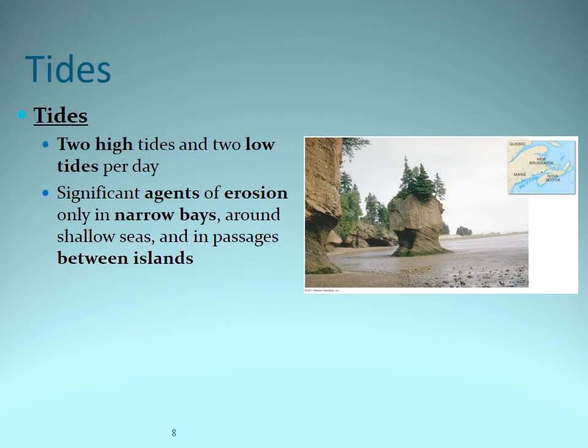Tides can actually be significant agents of erosion. This slide is showing a certain area in northeastern Canada — just north of Maine, the Bay of Fundy — where this section has been eroded away relatively recently because you can see trees growing on top of what we call a sea stack. Because the tides range very dramatically, they can erode a lot of the erodible rocks along the coast, creating these isolated stacks of rocks. So tides don't just create great surfing waves or strand boats in a harbor — they can actually be agents of erosion.